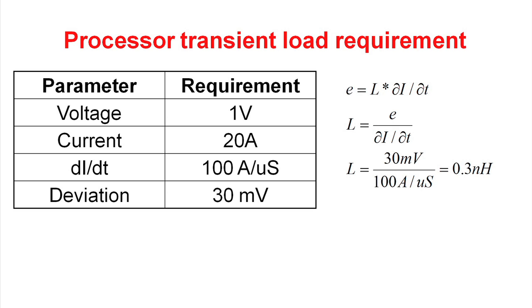At the power supply, you may see a change in your load current of 20 amps in less than a microsecond. Many times the processor people bandy around the transient requirement of 100 amps per microsecond. They want the power supply to maintain the voltage on their processor to within 30 millivolts during that time.